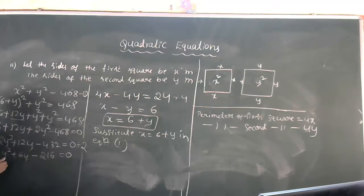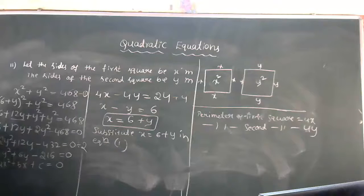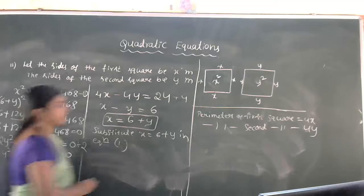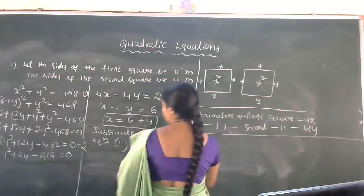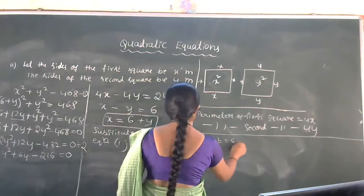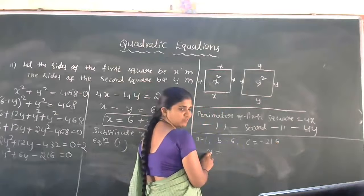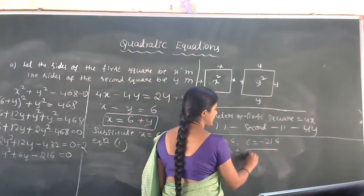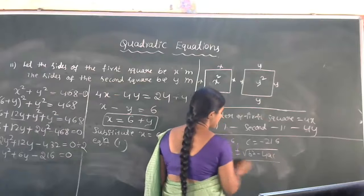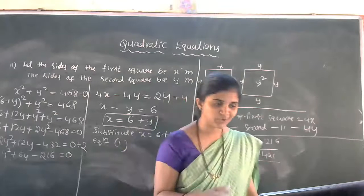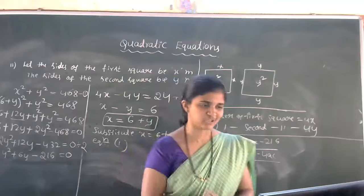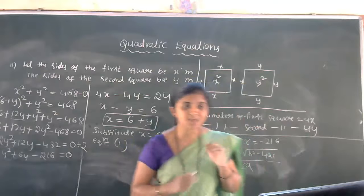The equation y² + 6y − 216 = 0 is in quadratic form. Here a = 1, b = 6, and c = −216. We will use the quadratic formula: y = (−b ± √(b² − 4ac)) / 2a. Forming the quadratic equation from the word problem is the most important step.